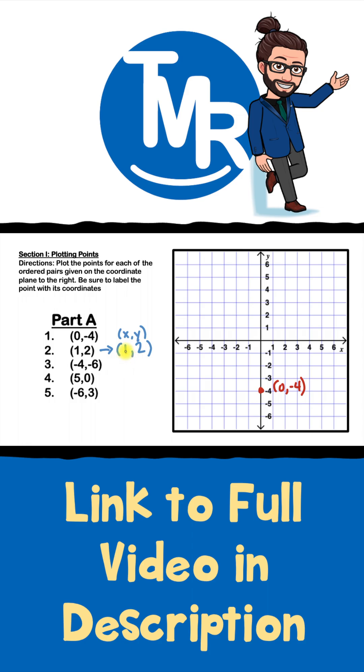So how do you think we'll plot the point one, two? Since our x-coordinate is one, it means we're gonna go one space to the right. And then we'll look at our y-coordinate. Since that's positive two, we'll then go two spaces up.